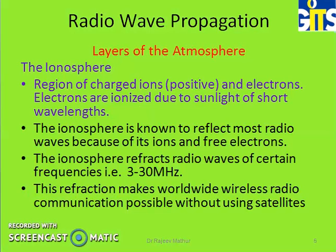The most important layer of the atmosphere from a communication point of view is the ionosphere. The region of charged ions is called the ionosphere. Electrons and positive ions are present here. The ionosphere is known to reflect most radio waves because of its ions and free electrons. It reflects radio waves of certain frequencies ranging from 3 MHz to 30 MHz, and this diffraction makes worldwide wireless radio communication possible.